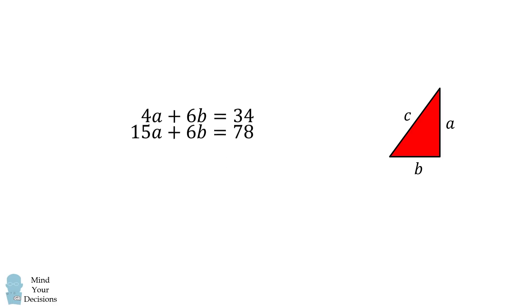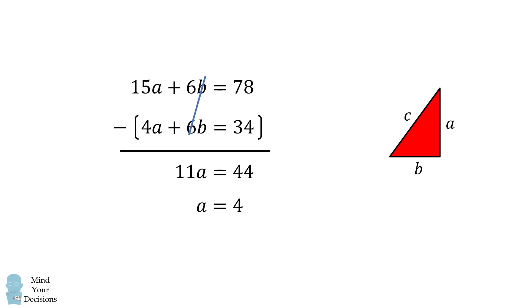We will now focus on these equations. Subtracting the second equation from the first will eliminate the b variables. We then have 11a is equal to 44, or a is equal to 4.